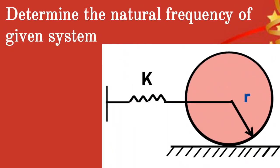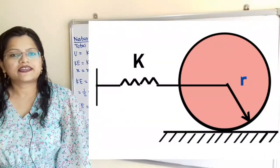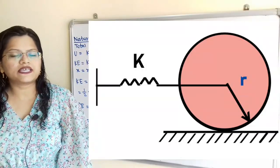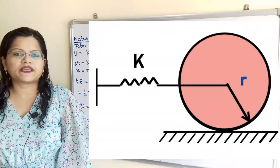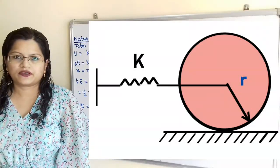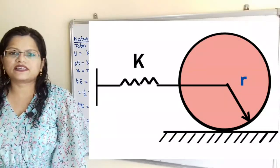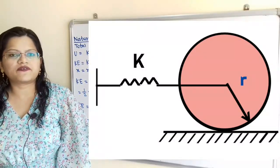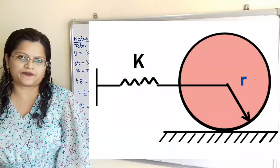Determine the natural frequency of the given system. Let us understand the given diagram. A disk of mass M and radius R is connected to the spring at the center. It is given that the disk is rolling on a fixed surface, and we have to find out the natural frequency of the system.